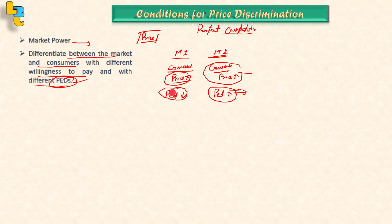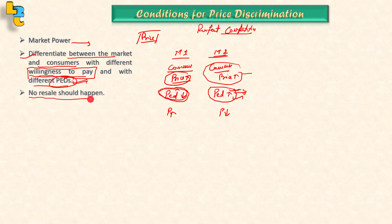If the producer charges more and the consumer will not go anywhere — will not stop consumption — then price elasticity of demand is low. The seller will charge higher prices in markets with lower price elasticity of demand.